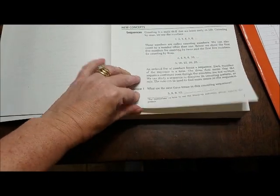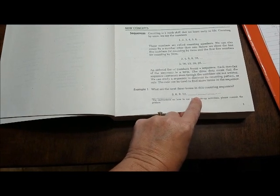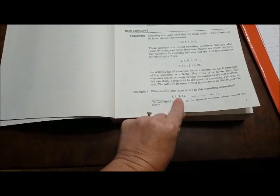Alright, so there you go. So that's what we're doing. And what are we counting by? Threes? Threes, yep. So our rule is three here.